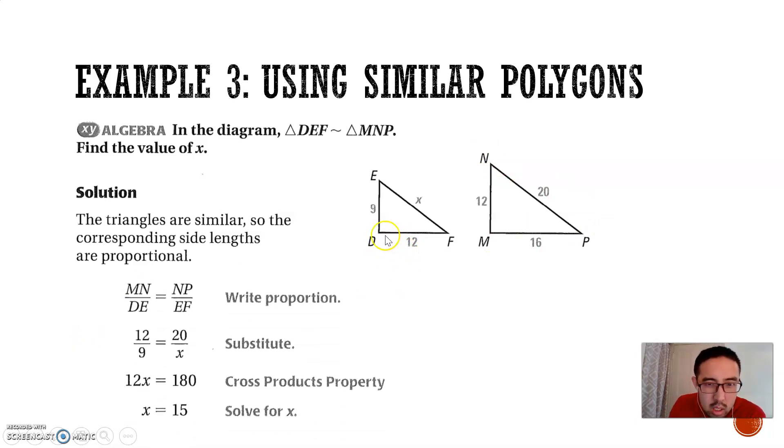They did MN to DE, so MN to DE should be the same ratio as 20 to x. If you were to reverse it, it's still going to work. So 12 over 9 equals 20 over x. If you cross multiply, you get 12x equals 180. And if you divide by 12, you get x equals 15.